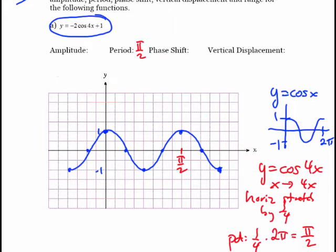The next parameter I'm going to look at is phase shift. X has not been replaced by x plus or minus something. So there's no shifting of the graph left or right, which is good news.